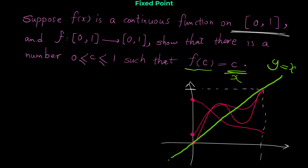For any graph you can imagine, x is one axis and f(x) is the other. In all of these curves, somewhere your function equals x — that is, f(x) = x. Whatever continuous curve you imagine inside this box definitely crosses the line y = x somewhere. This is the claim of the question, and it is a really important result from the Intermediate Value Theorem with many applications.